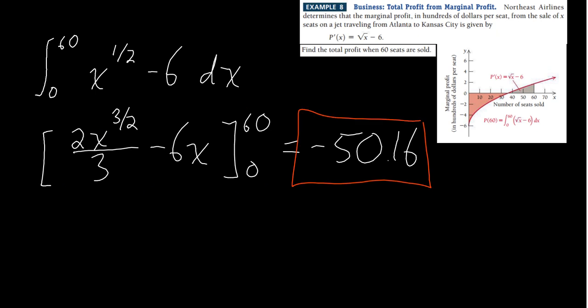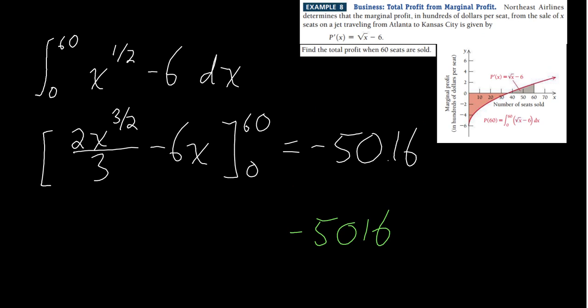The result is negative 50.16 in hundreds of dollars, so we're looking at a profit of negative $5,016. When we sell 60 seats, we're operating at a loss. This was predictable from the graph — the pink shaded area was visually greater than the gray shaded area when we integrate from 0 to 60.